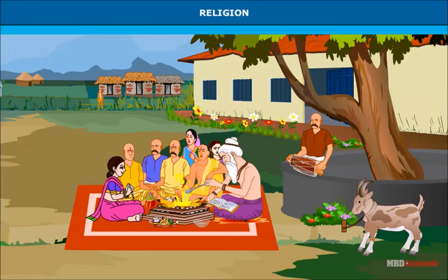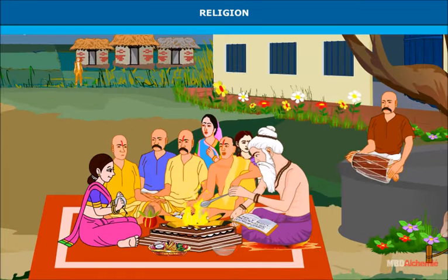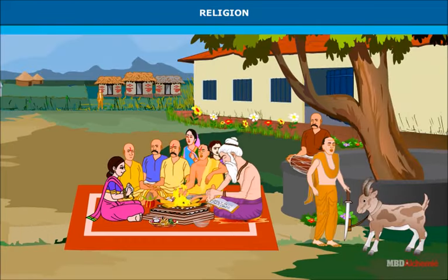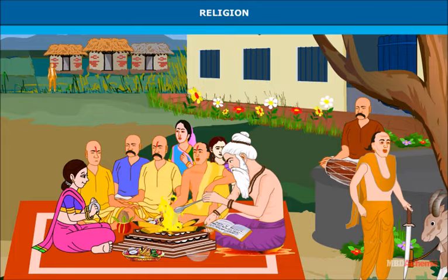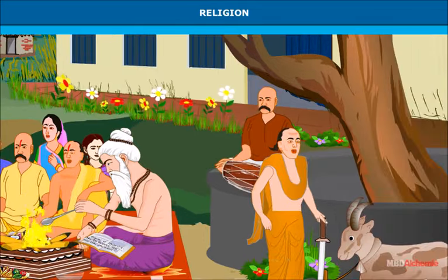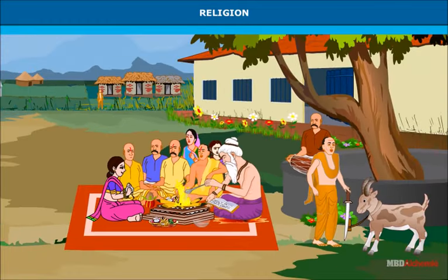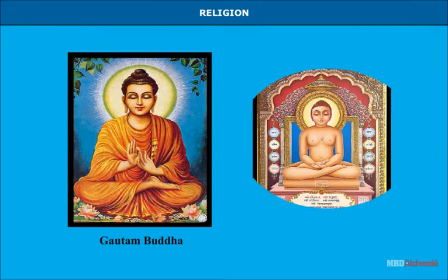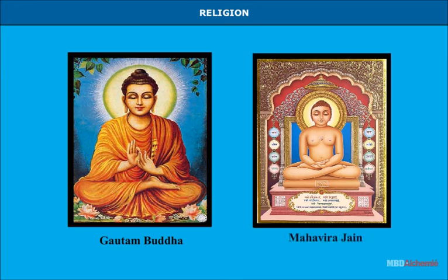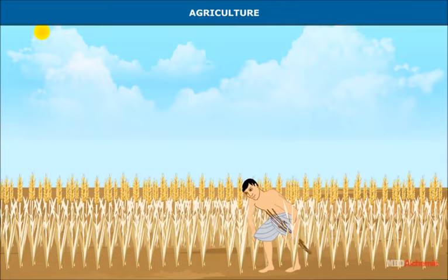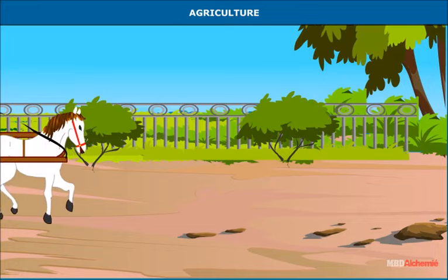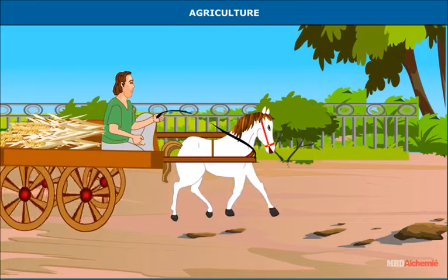Religion: Brahmanism was the prevalent religion. The Brahmins performed all the rituals and ceremonies in Sanskrit, a language not understood by the common people, and the common people could not afford the expensive rituals. This paved the way for the rise of Buddhism and Jainism.